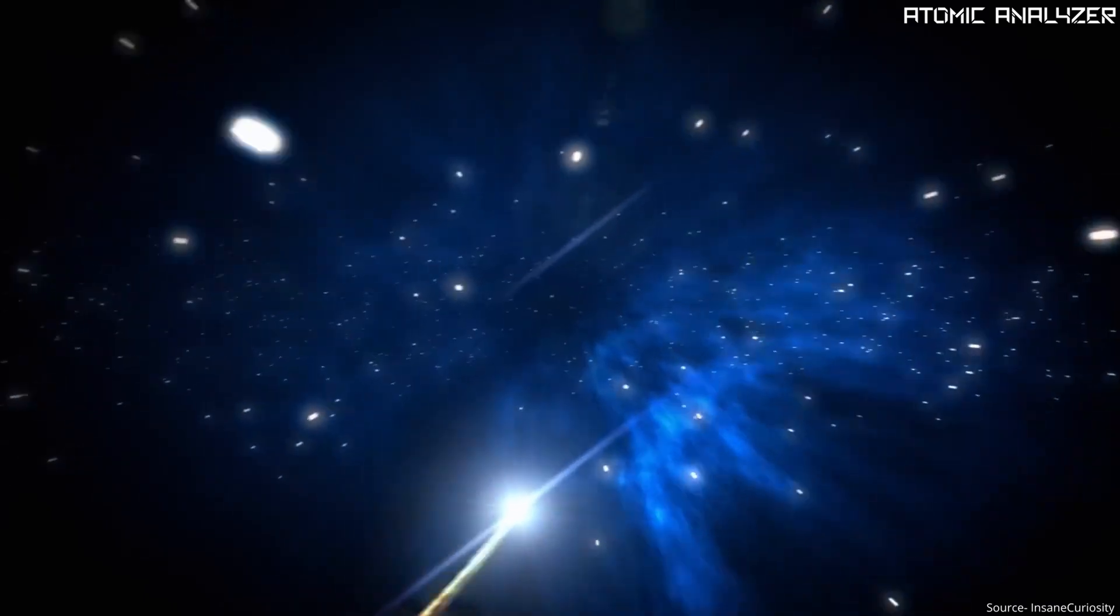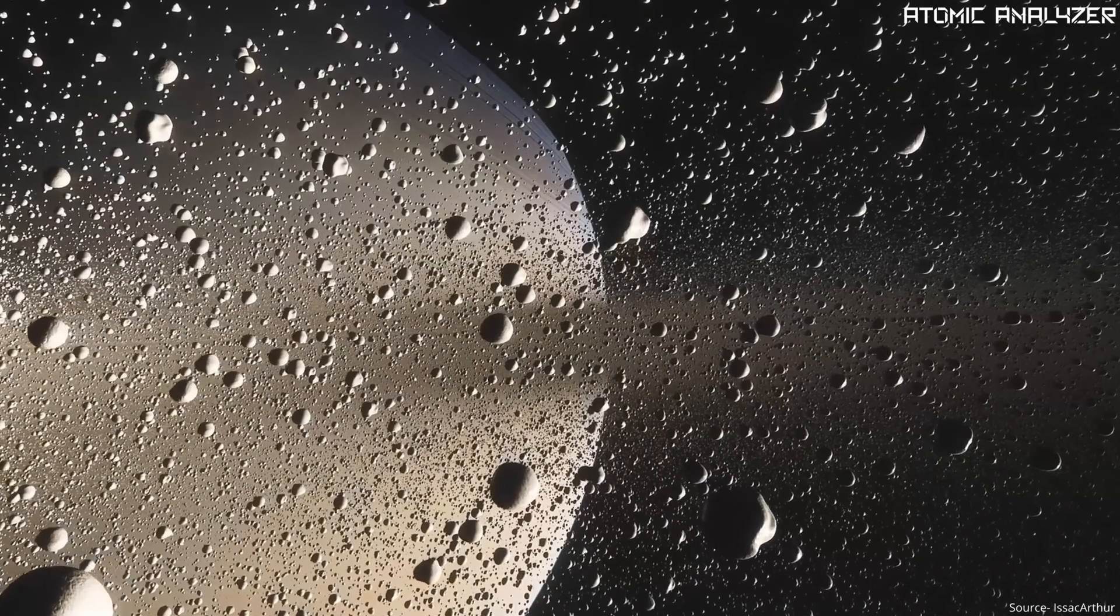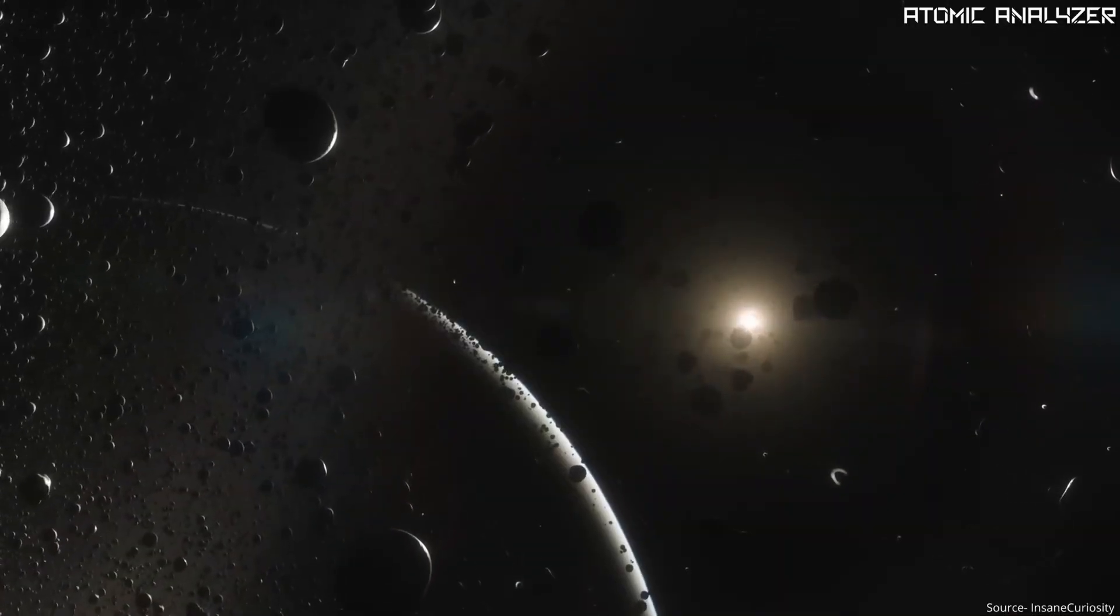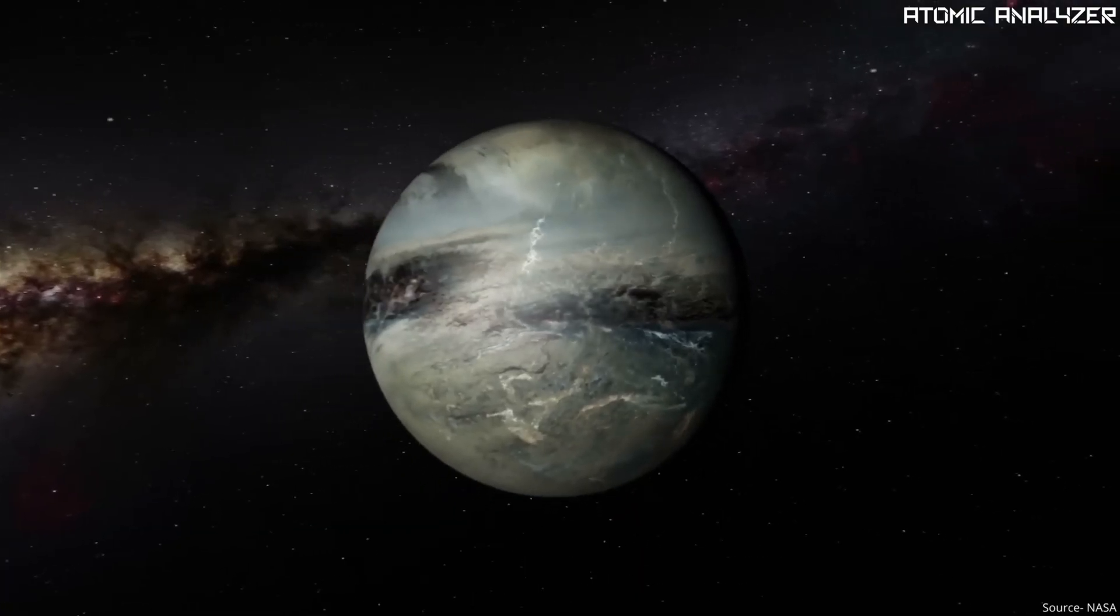In this Kuiper Belt, we have thousands of these icy objects, ranging from small rocks to something you might even call dwarf planets, like our old friend Pluto.